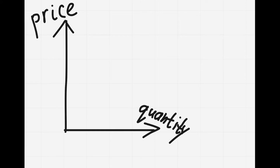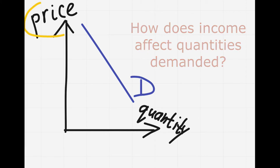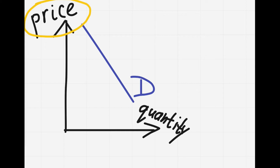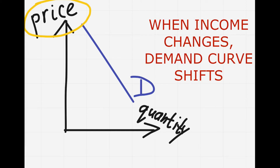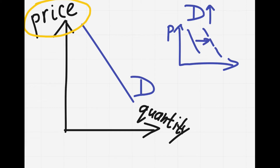First, let's recall what demand is. Demand is a downward sloping line that shows how prices affect quantities demanded. Our video is about income, and the graph doesn't show income — it shows prices. That is why every time income changes we have to shift the entire demand curve. When demand rises, the demand curve shifts to the right. And when demand falls, the demand curve shifts to the left.